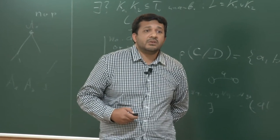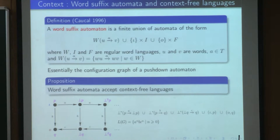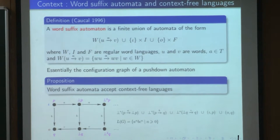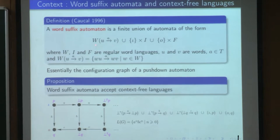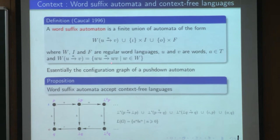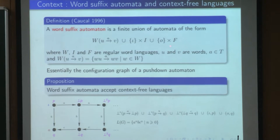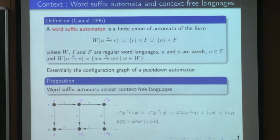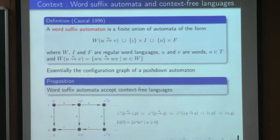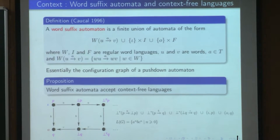Let us give an example of automata. Consider word suffix automata. A word suffix automaton is defined from a word rewriting system — a finite set of word rewriting rules. Each rule has a context that is a regular word language, a left-hand side and a right-hand side that are just words. A word suffix automaton is just the suffix rewriting graph of such a rewriting system. Word suffix automata are essentially the configuration graphs of pushdown automata, and they accept exactly the context-free languages.